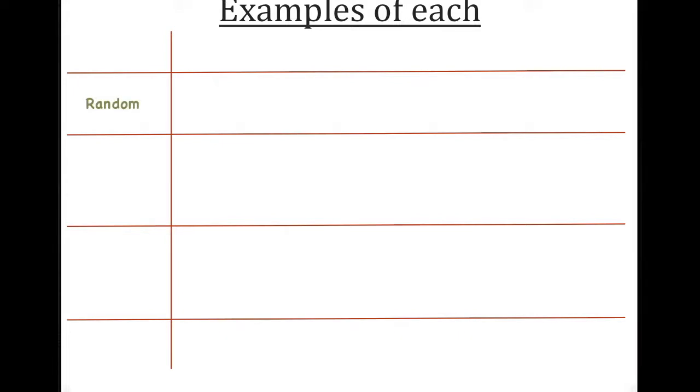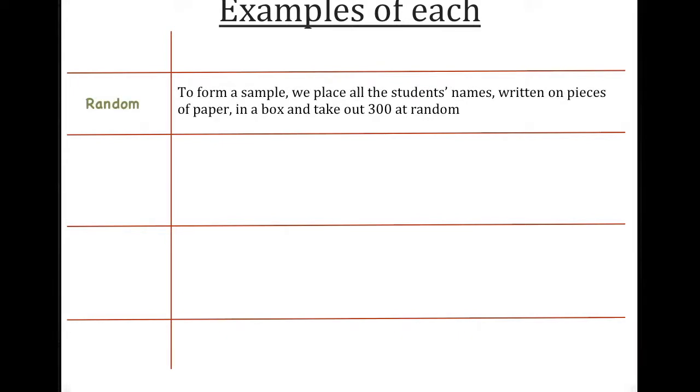So here are some examples just to get you understanding a little bit more. So a random sample would be, we place all the students' names, written on pieces of paper in a box, and we take out 300 at random. That's a random sample.